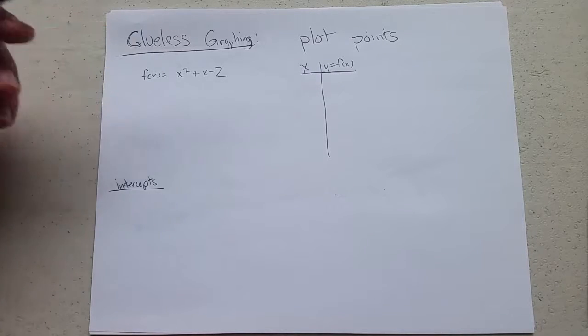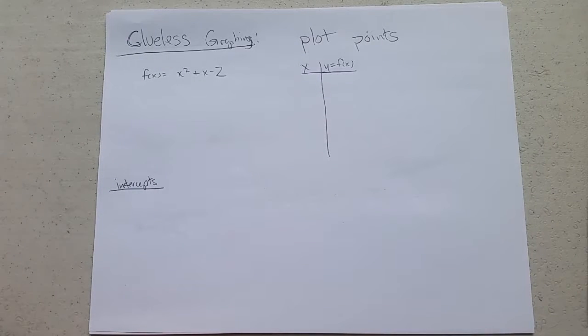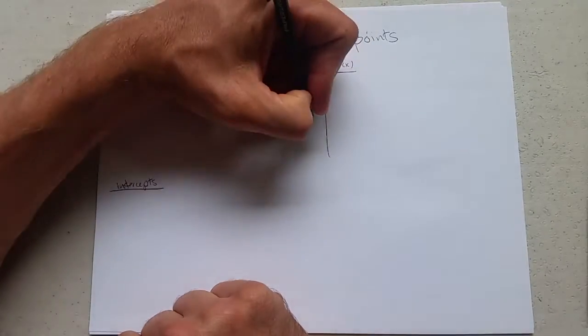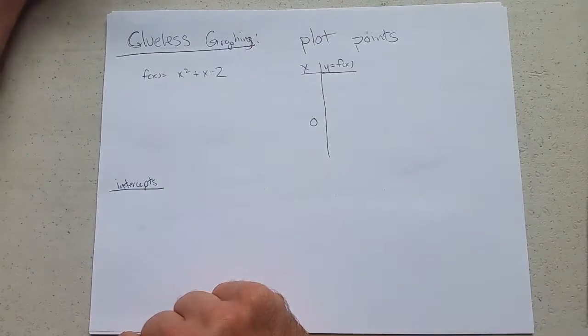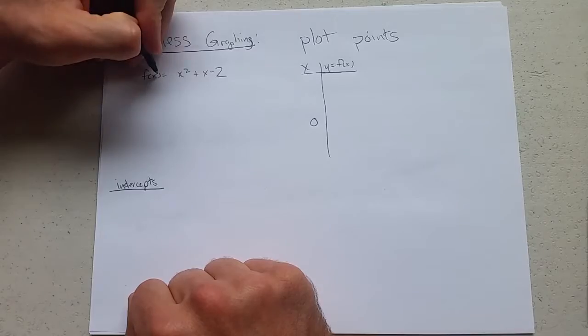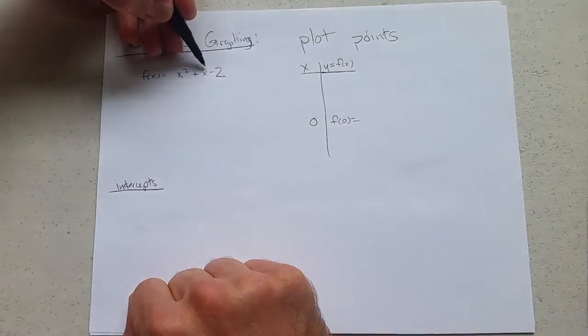So here's our function f of x and I'm going to plot some points, but first I'm going to make a table so I can get some values. I like to use 0 whenever I can - y is 0, nice, usually very fast to plug in. What is f of 0? 0 plus 0 minus 2 is negative 2.